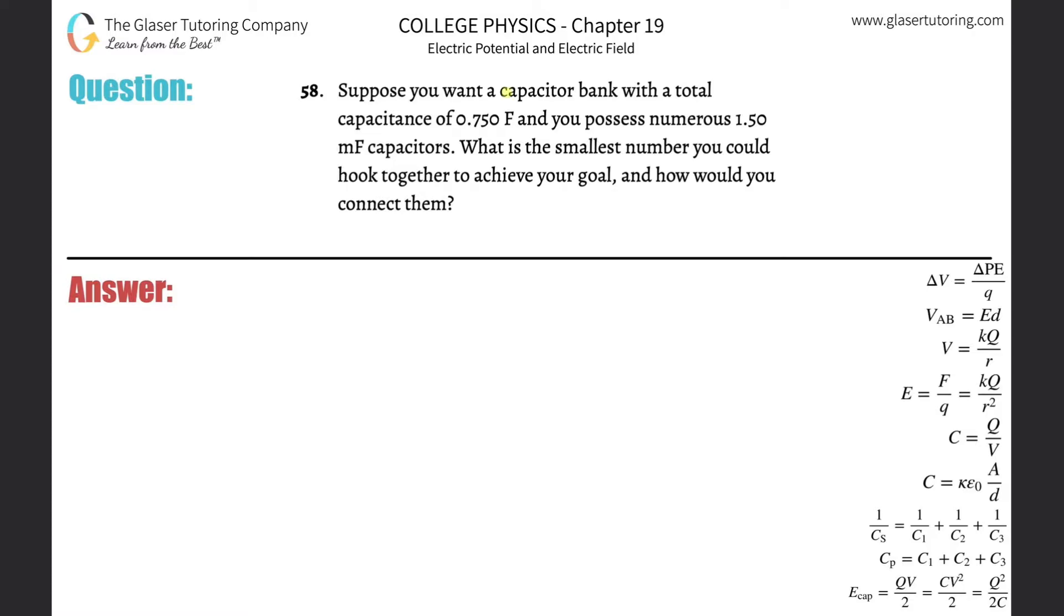Number 58: Suppose you want a capacitor bank with a total capacitance of 0.75 farad and you possess numerous 1.5 millifarad capacitors. What is the smallest number you could hook together to achieve your goal, and how would you connect them?